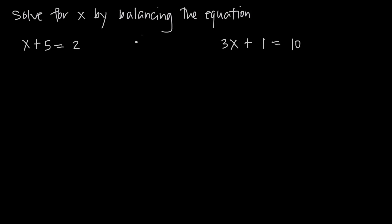Let's look at a very simple equation. For example, x is equal to x. We can see right away, we know intuitively that this equation is perfectly balanced. Of course x is equal to x — they're the same thing. So both sides of the equation are balanced.